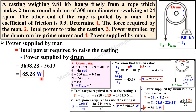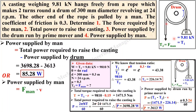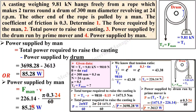Simplifying gives the fourth answer: power supplied by the man. Alternatively, you can find the same value using another approach: power supplied by the man equals force multiplied by velocity, where the force is T2 = 226.14 N and the velocity V = πDN / 60. Substituting these values gives the same result. Both options give similar values, so you can find the power supplied by the man using either method.